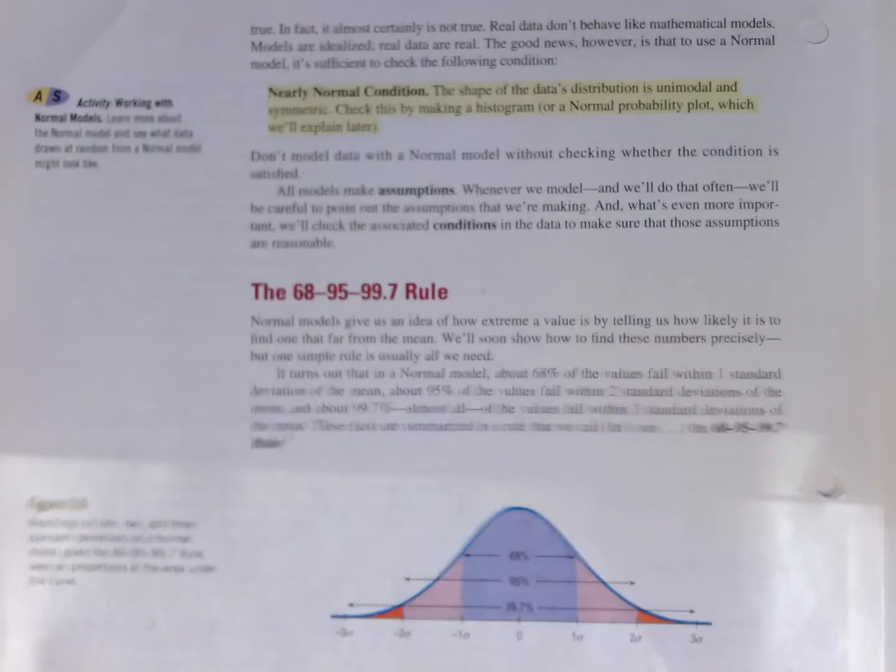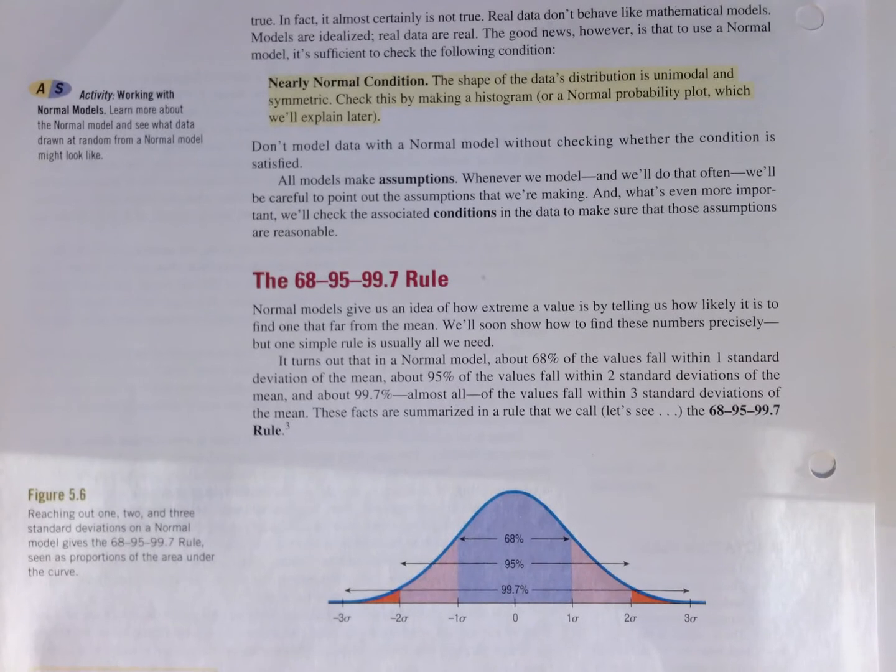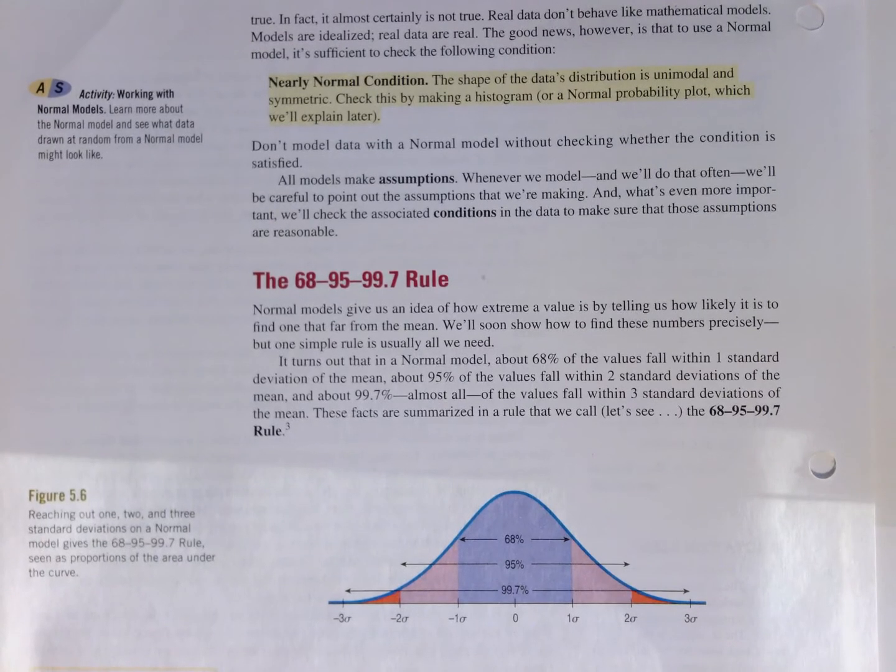With good tails that drop off pretty quickly. This is probably one of the most important pictures in the book, the idea of the empirical rule, or the 68, 95, 99.7 rule.